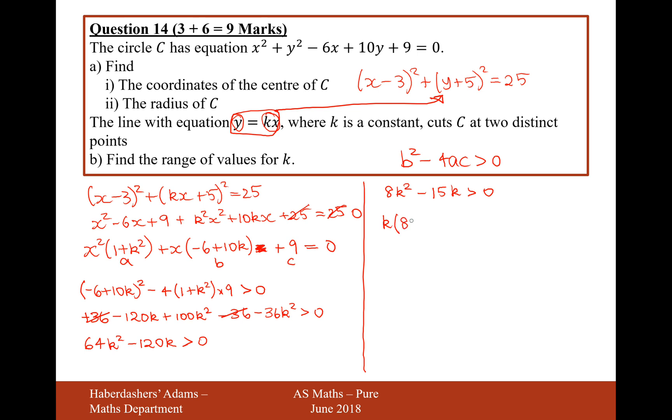Now, we need to solve this. We'll solve this by factorizing: k times 8k minus 15 is greater than 0. Let's now draw a quick sketch of what this graph will look like. It will have an intersection at 0 from this solution here. And from this solution here, it's going to have k equals 15 over 8. It's going to be a quadratic that looks like this with solutions at 15 over 8 and 0. When is it greater than 0? Well, it's greater than 0 in these two regions here.